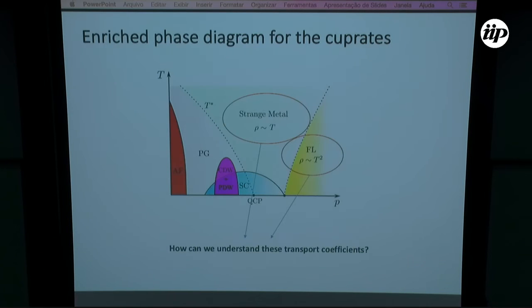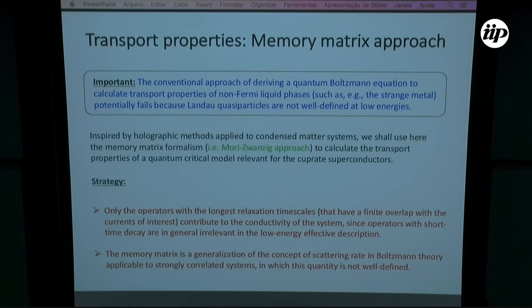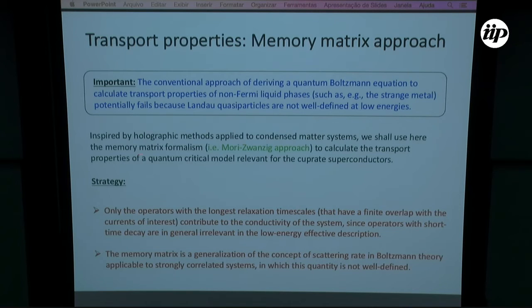There is a problem: the strange metal phase is a non-Fermi-liquid phase. We cannot rely on the quantum Boltzmann equation to calculate transport properties of a non-Fermi-liquid phase, because it potentially fails since there are no Landau quasiparticles at low energy. So we are going to use a different approach called the memory matrix formalism, which does not rely on the existence of well-defined Landau quasiparticles.